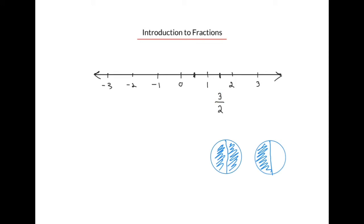So the fraction 3 over 2 is a whole plus half a whole, and we can indicate that as 1 and 1 half. The fractions 3 over 2 and 1 and 1 half are equivalent. We call the fraction 3 over 2 an improper fraction, and the fraction 1 and 1 half a mixed fraction.